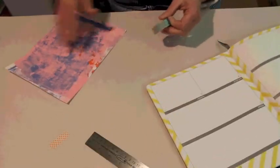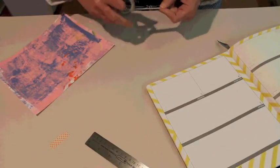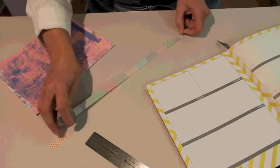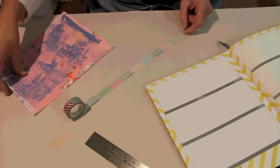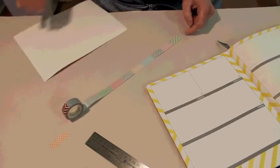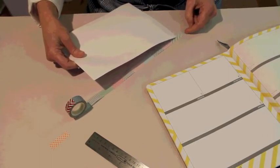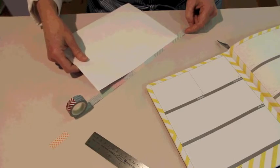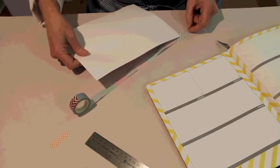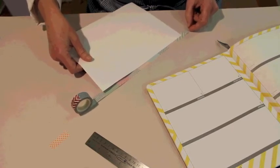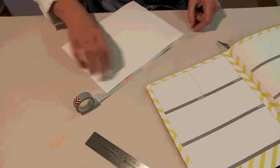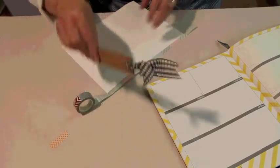So I'm going to start by rolling out some washi tape sticky side up and I'm going to flip my pretty paper, my jelly printed paper over, and I'm going to lay it on my washi tape about halfway.